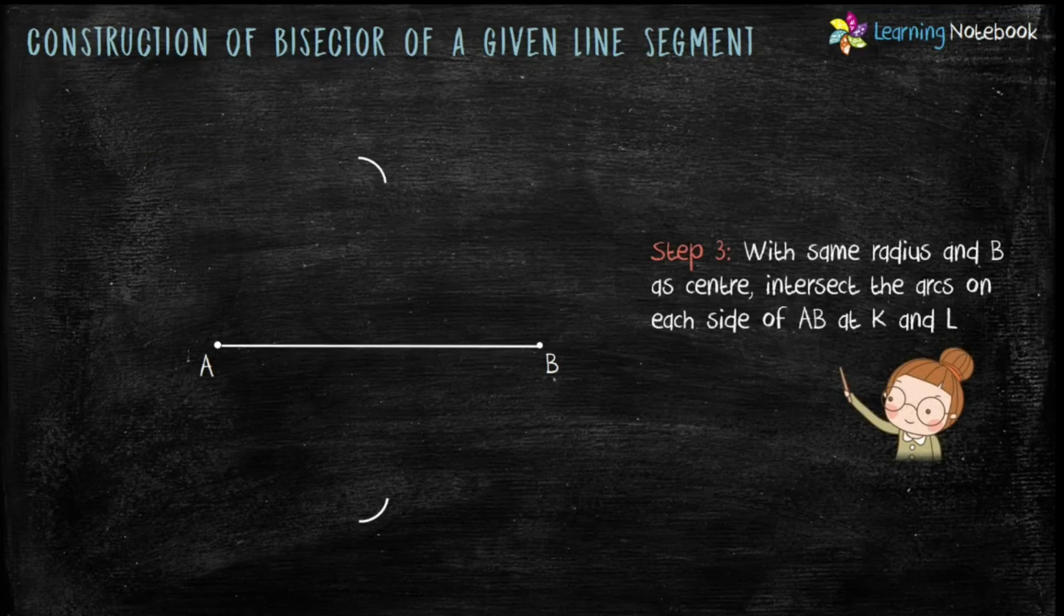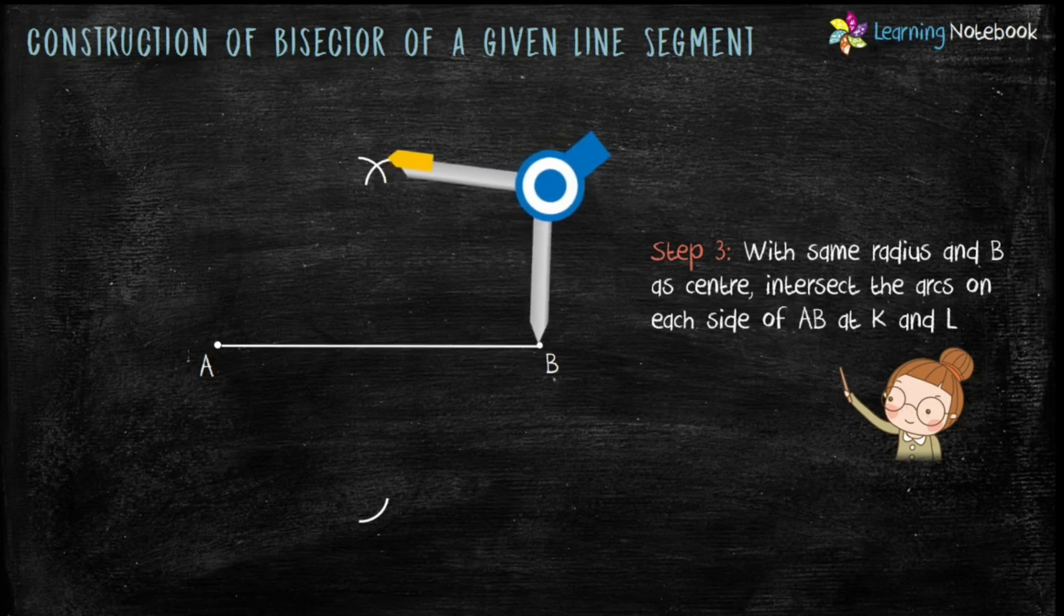Now in step 3, with same radius and B as center, intersect the arcs on each side of AB at points K and L.